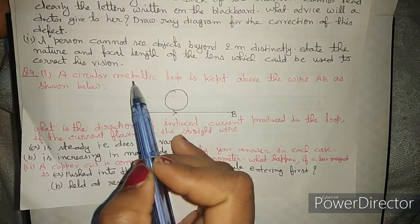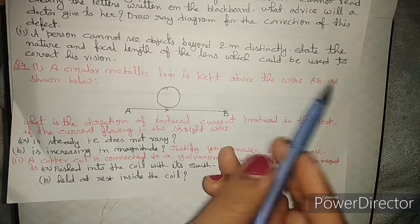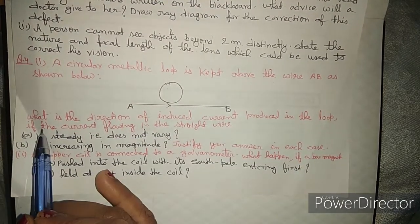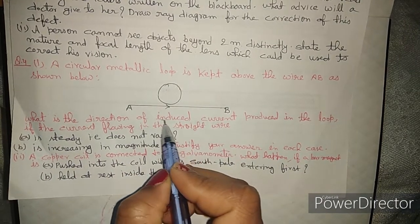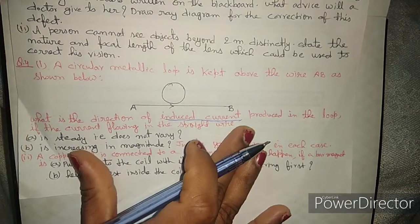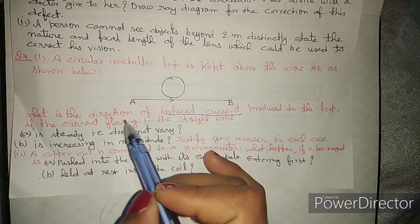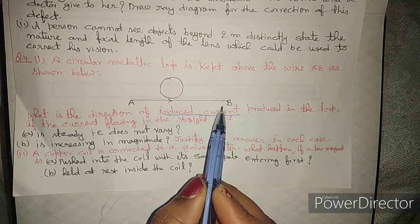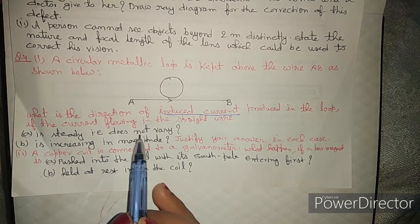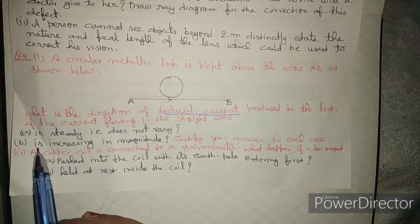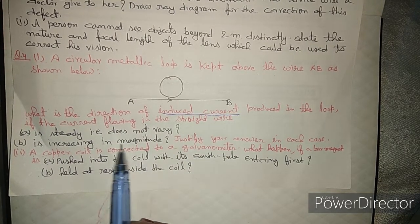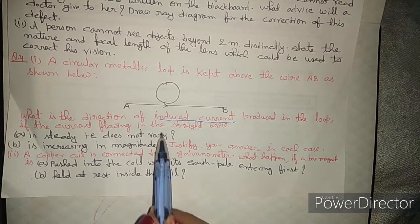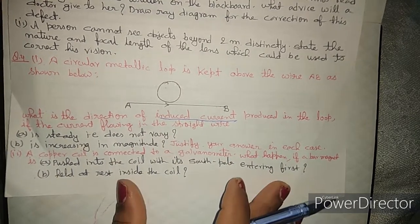Question four, part one: a circular metallic loop is kept above a wire AB. What is the direction of the induced current in the loop if the current in the straight wire is steady and does not vary, and separately, if the current is increasing in magnitude? You must justify your answer in each case.